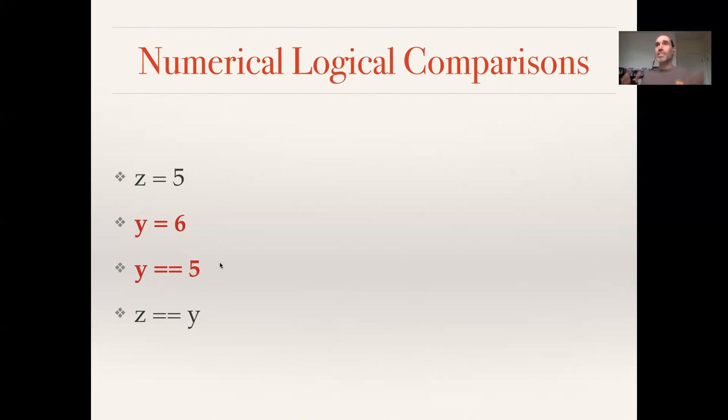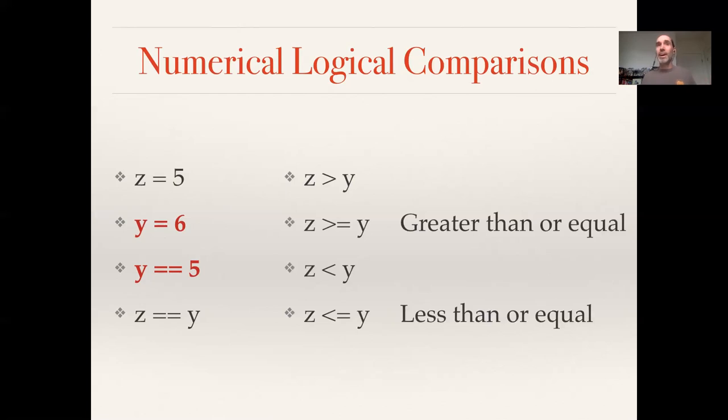For numbers, in addition to having this equal question, we have a few other logical comparisons that are really handy. They're ones you've seen since elementary school. So you can ask whether Z is bigger than Y with a greater than. You can ask whether Z is less than Y with a less than. And I can also combine the greater and less than with an equal to ask whether something is greater than or equal to something or something is less than or equal to something.